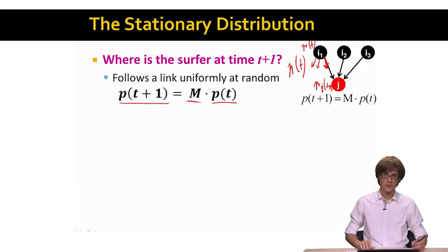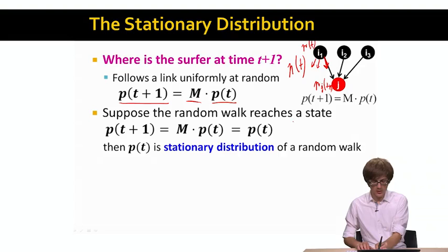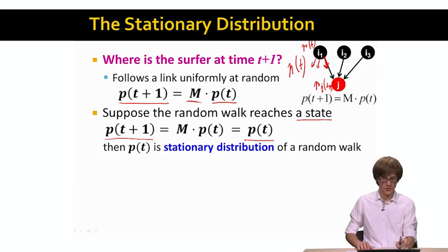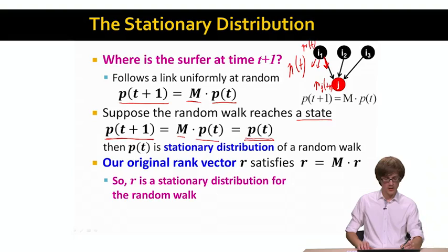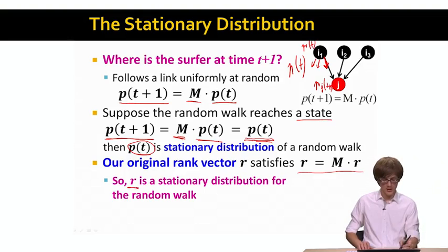This means that the probability distribution of where the random walker resides at time t plus 1 is simply our matrix M times the probability distribution where the random walker was at time t. Now suppose that the random walk reaches a steady state — meaning the probability distribution at time t equals the probability distribution at time t plus 1. This means p of t is a stationary distribution: p of t equals M times p of t. Before we had r equals M times r; now we have p of t equals M times p of t.